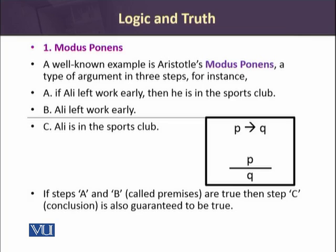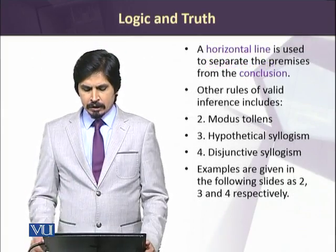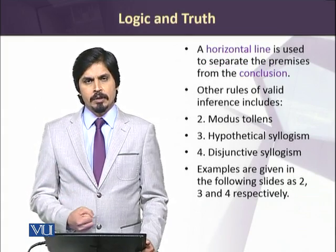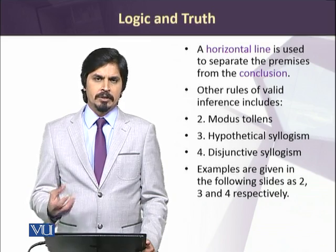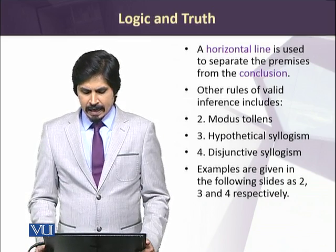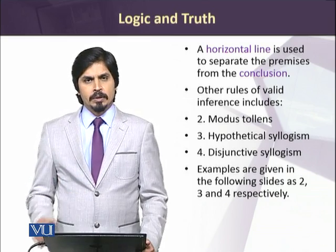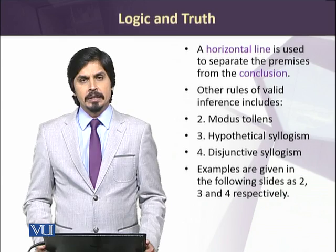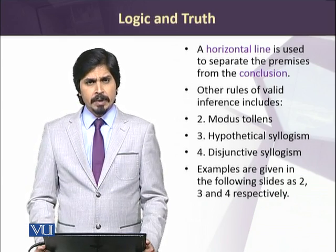If steps A and B — which are the premises — are true, then step C, the conclusion, is also granted to be true. A horizontal line is used to separate the premises, which are the initial arguments of an overall argument, from the conclusion. The statement written below the horizontal line is the conclusion in traditional logic.